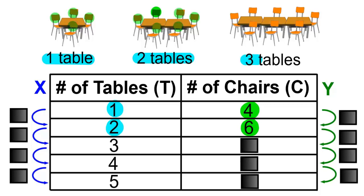And if we have three tables, we're going to have one, two, three, four, five, six, seven, and eight chairs.